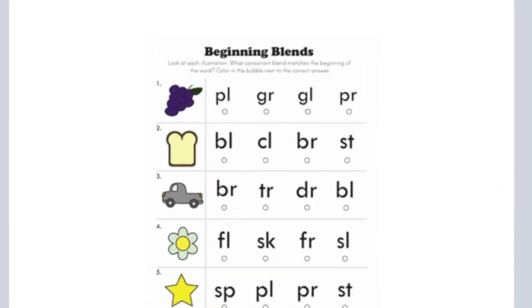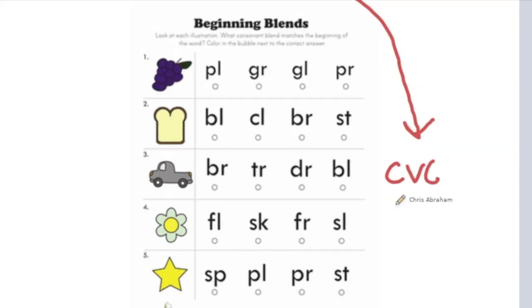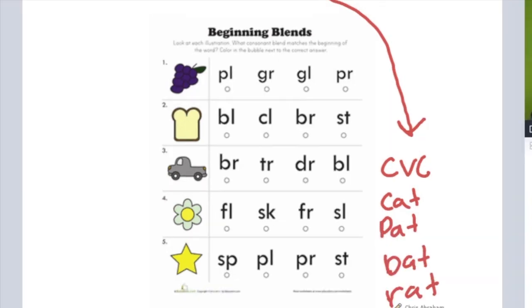In this picture it has to do with beginner readers and working with blends, common consonant blends. When we think about basic words, basic words are CVC words like cat, pat, bat, rat. These are all basic CVC words.